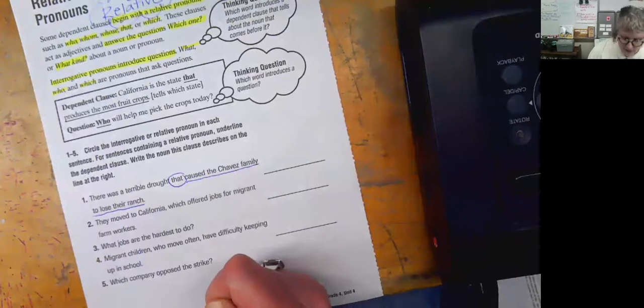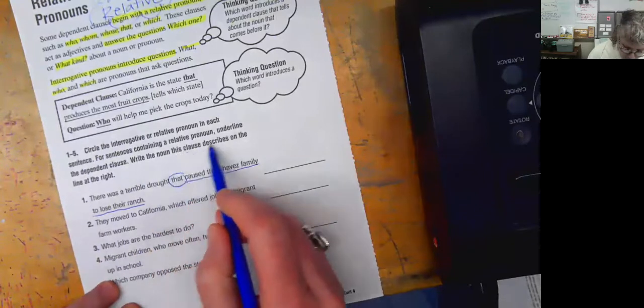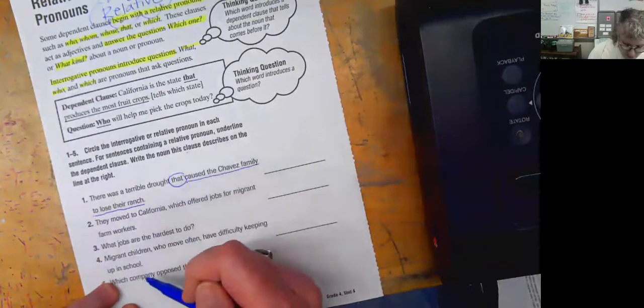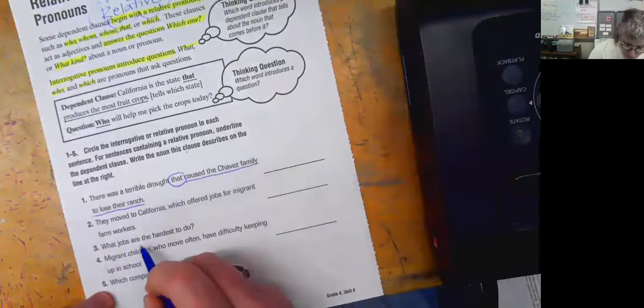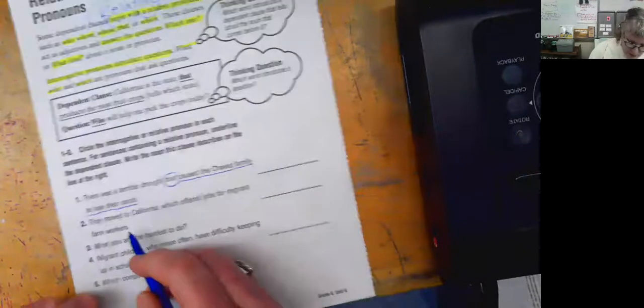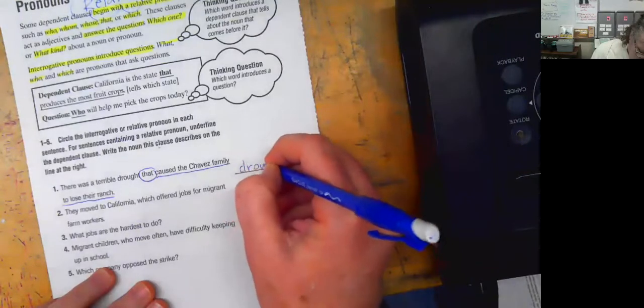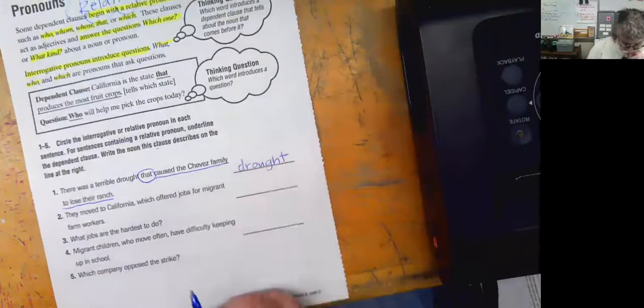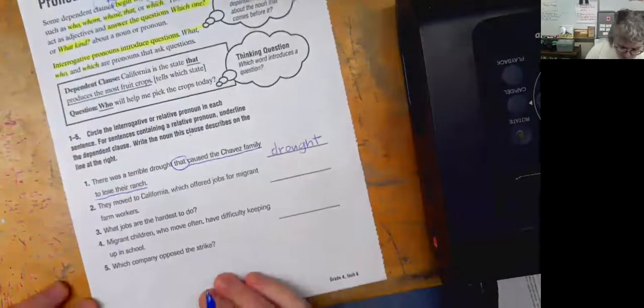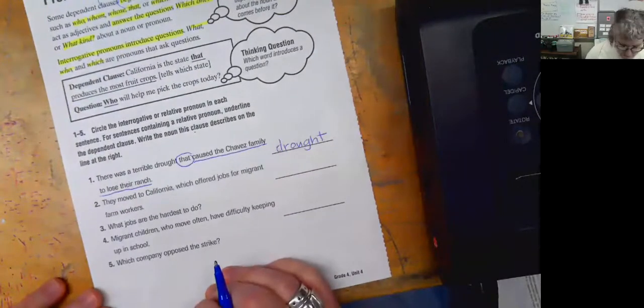And now we're going to ask ourselves, they want us to write what is it describing on the line at the right? Well, what caused the family to lose their ranch? The drought. Right? Does that make sense? Yeah. Okay.